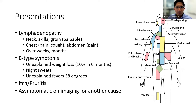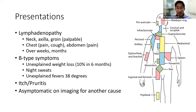Patients can get something called B-type symptoms, which have very particular definitions: unexplained weight loss of 10% of body weight in six months; drenching night sweats — people are changing bedsheets or bedclothes every day; or fever up to 38 degrees with no infection. To get the fever you really need a large volume of disease. A few other interesting things include itch or pruritus with no visible rash, which can be worsened with alcohol.